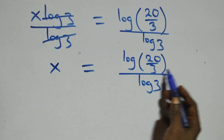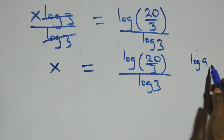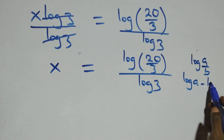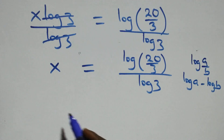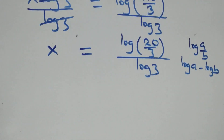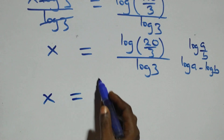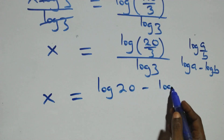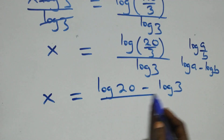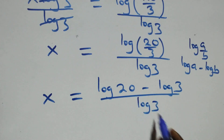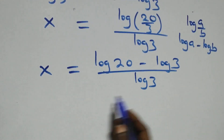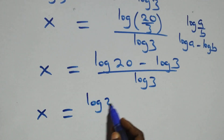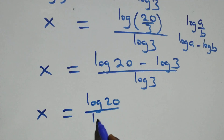This follows the law of logarithms. We separate the fraction, and we have x equals log of twenty over three divided by log three. Separating the two fractions gives x equals log twenty over log three.